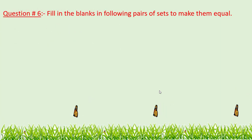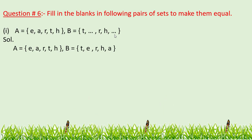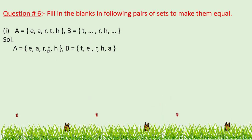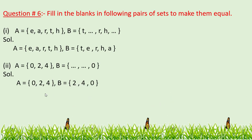Question number 6: fill in the blanks in the following pairs of sets to make them equal. Remember that two sets with the same elements are called equal sets. Fill in the blanks so that the elements in both sets are the same. For the first part, we write E and A — both sets now have the same elements. For the second part, we fill in the blanks with 2 and 4 to make the sets equal, so set A and set B are equal because both sets have the same elements.